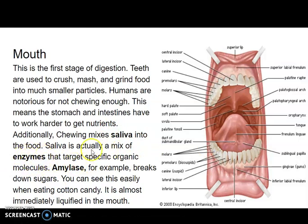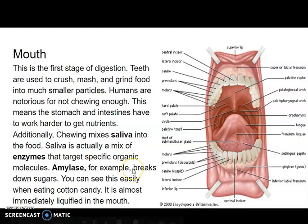Saliva is not just a liquid — it has proteins, specifically enzymes, that target specific molecules. Amylase is one of those enzymes in your mouth. Amylase is the reason why you can put a sucker in your mouth and it will dissolve, why a candy cane dissolves in your mouth, and why cotton candy breaks down in your mouth without you having to swallow it. Those are all sugars, and they're broken down by amylase.